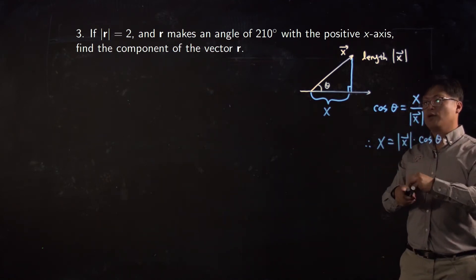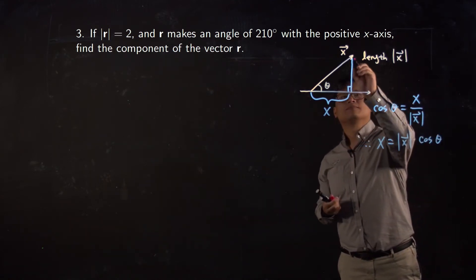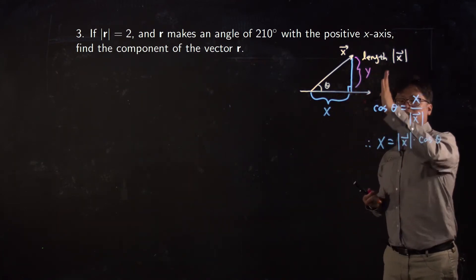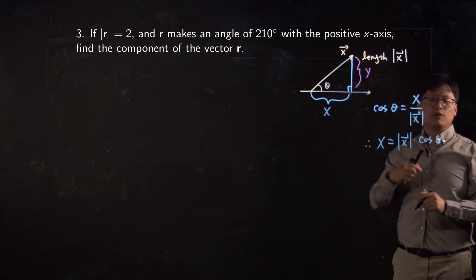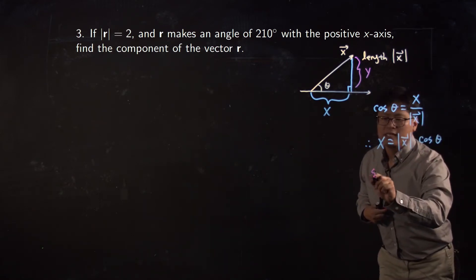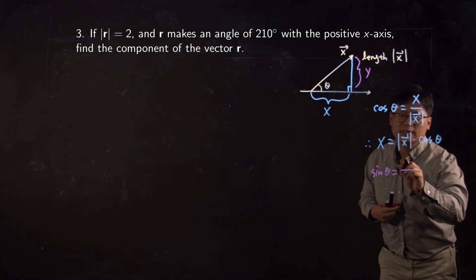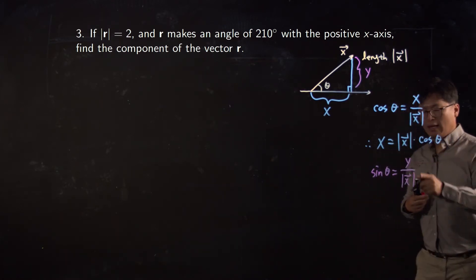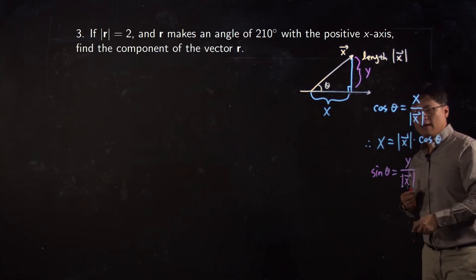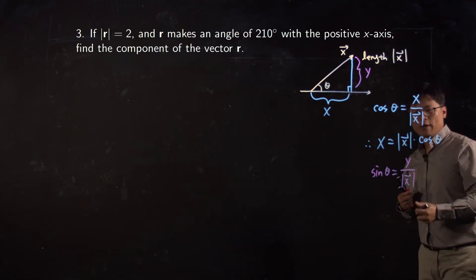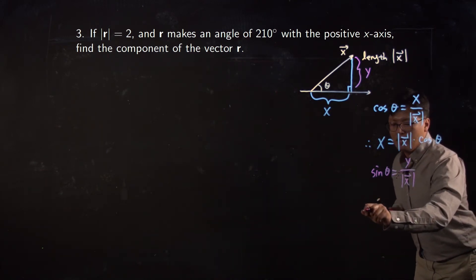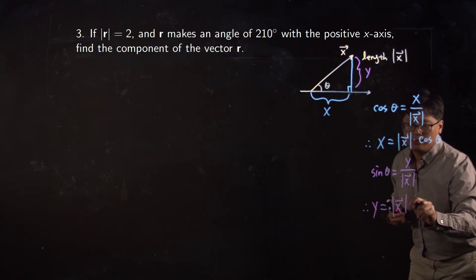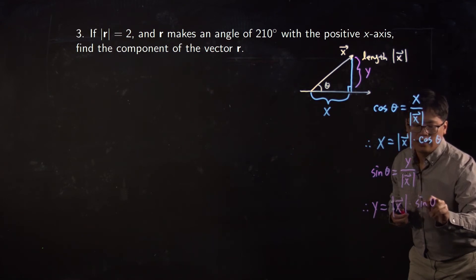In the same manner, what about the y-component? That is the opposite side of angle theta, which is concerned with sine. Since sine theta equals opposite over hypotenuse — which is the length of the vector — multiplying both sides by the length of the vector, your y-component can be written as the length of the vector times sine theta.